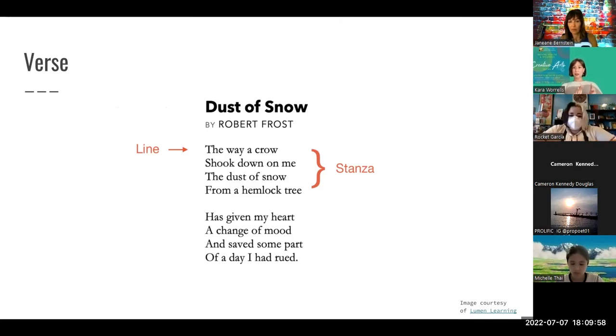So a stanza is essentially a paragraph of a poem and it is a collection of lines which is just a singular row of words. The lines are constructed and enjambed. So the way a crow and then it breaks off into shook down on me is a line break.